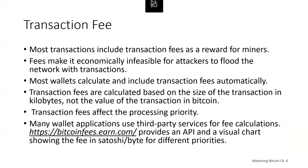Most transactions include Bitcoin transaction fees, which compensate miners for securing the network. Fees also serve as a security mechanism by making denial-of-service attacks economically infeasible. Transaction fees serve as an incentive for miners to include a transaction in the next block and as a disincentive against system abuse. Transaction fees are collected by the miner who mines the block that records the transaction. That miner gets paid twice: once for the block reward and secondly with all the transaction fees.